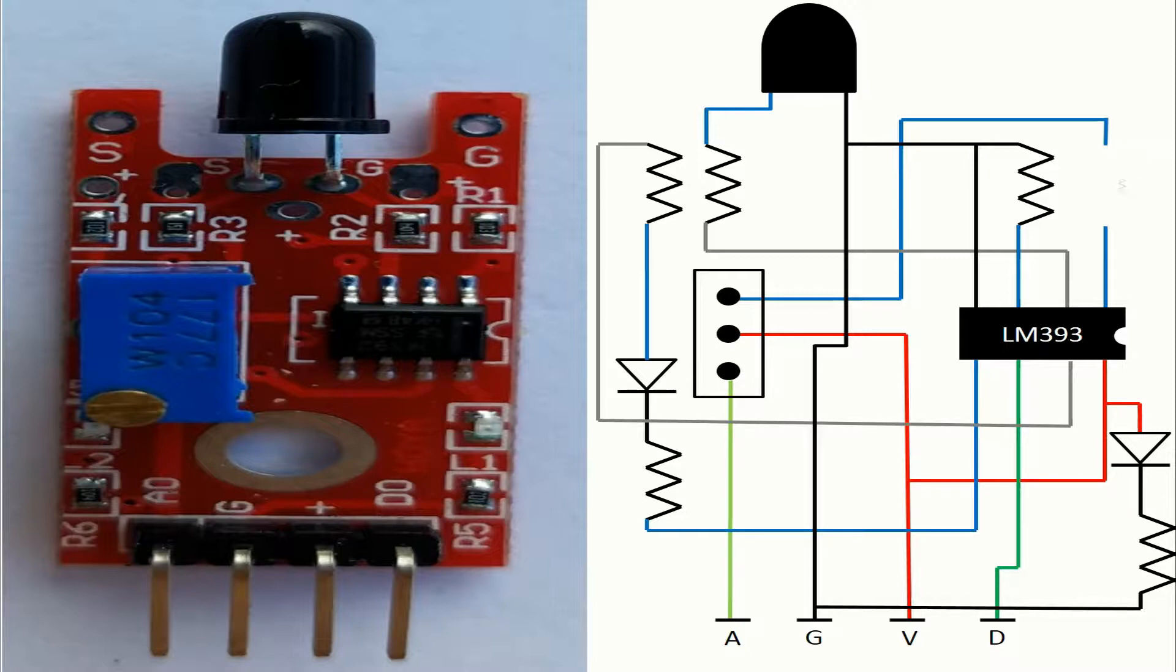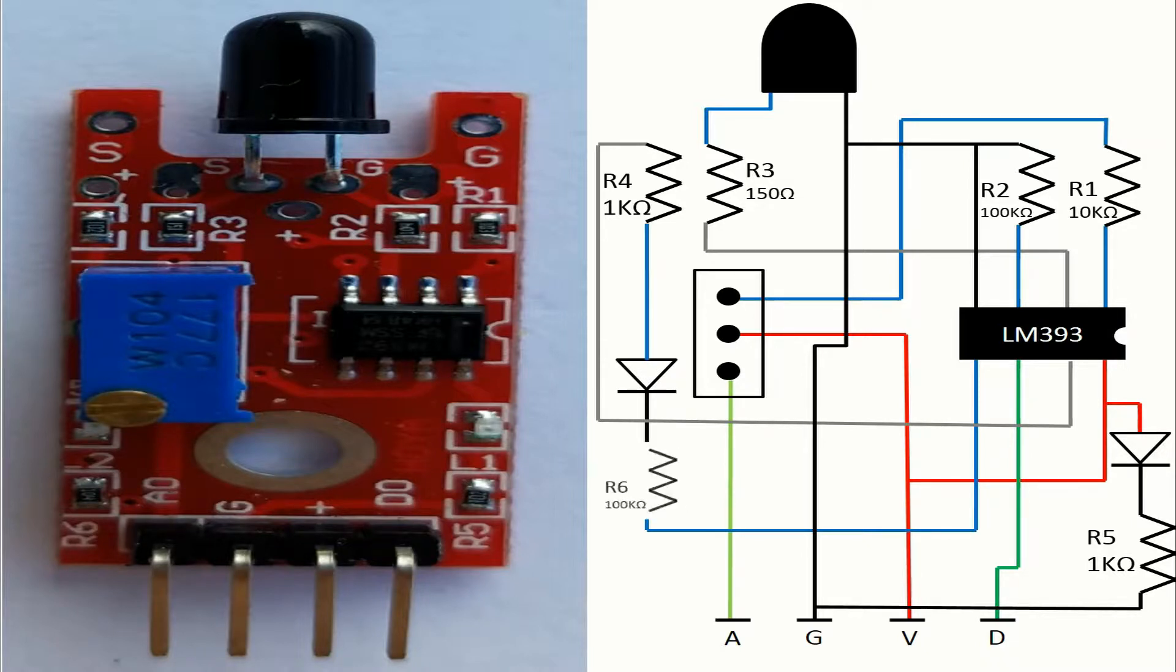The resistor R1 used in this module is 10 kiloohms. The resistor R2 is 100 kiloohms. The resistor R3 is 150 ohms. The resistor R4 is 1 kiloohm. The resistor R5 is 100 kiloohms.